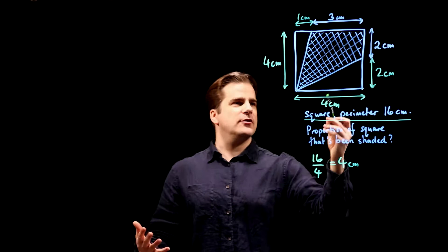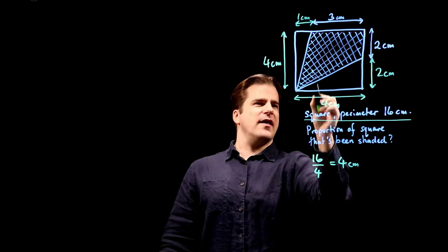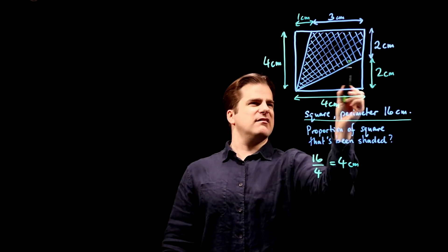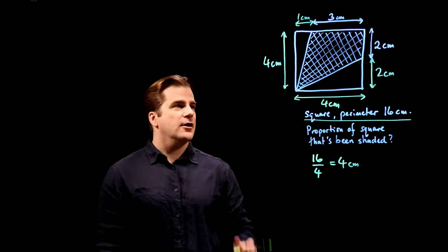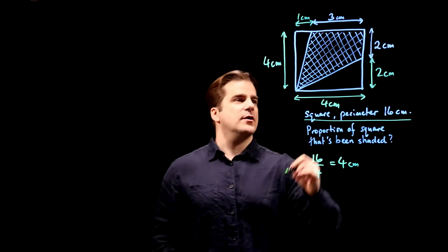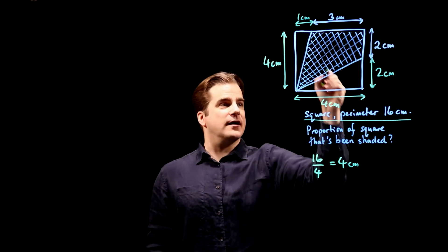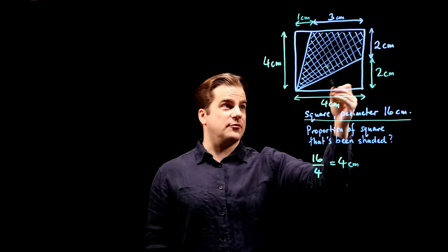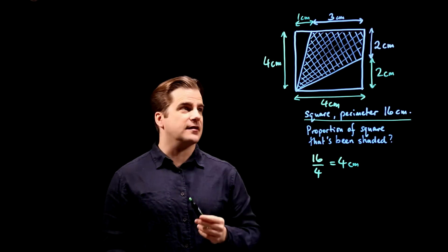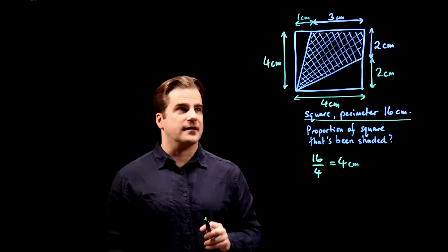Working out the area of this shaded area is difficult directly. I mean, how would you divide it up? If you come down there, then do you just draw a box there? It's a nightmare. Far simpler to work out the area of these two triangles, the unshaded bit, and then subtract that from the total area, which is 4 times 4, which is 16 centimetres squared.